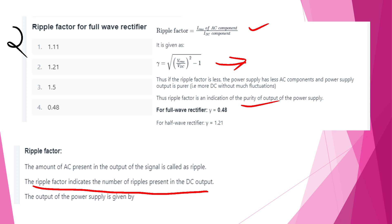For a full-wave rectifier, the ripple factor is 0.48. For a half-wave rectifier, the ripple factor is 1.21.